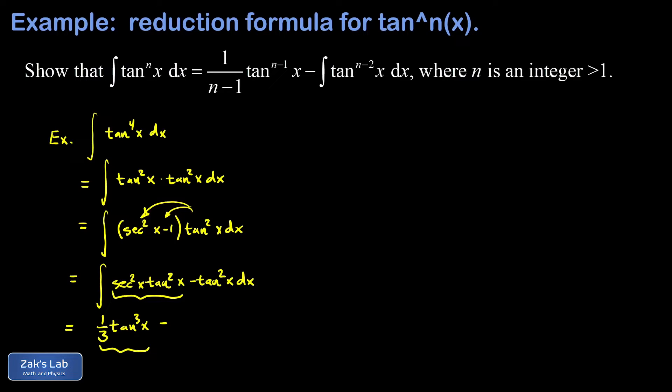First, you differentiate with respect to the tangent function and the three cancels the one third and the power becomes a two. And then you tack on the derivative of the tangent function, which is secant squared. And we get back where we started.